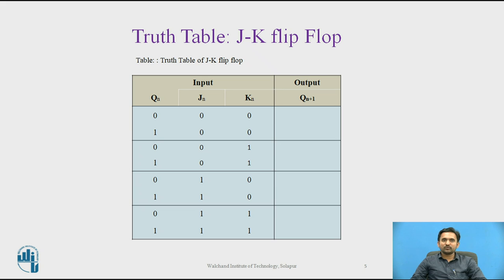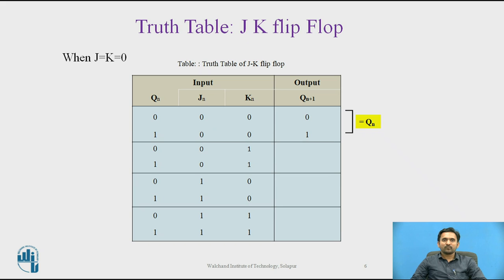The truth table is useful during analysis of sequential circuits when the values of flip-flop inputs are known and we want to find the value of flip-flop output Q. When both J and K are 0, the clock pulse has no effect on the output — the output remains the same as its previous value, because the output of the respective AND gate becomes 0.